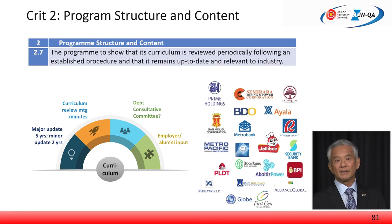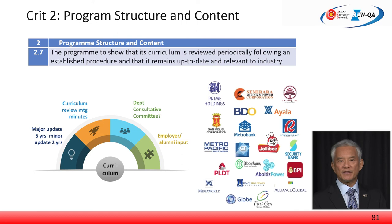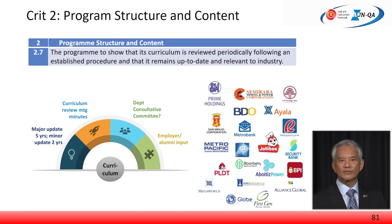Important for Requirement 2.7 is to show that curriculum changes are actually effected as a result of stakeholder input and curriculum reviews. Curriculum reviews in university typically take place every two years for minor revision and four to five years for major revisions.